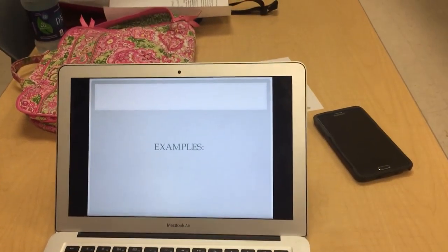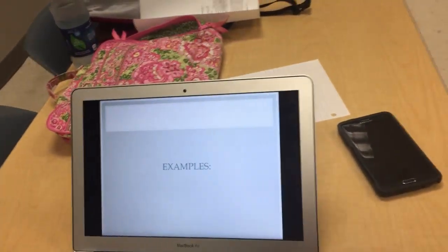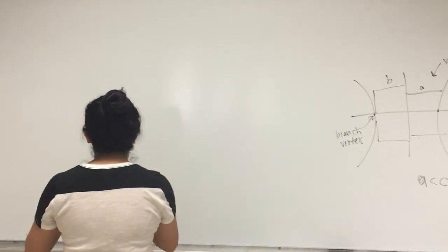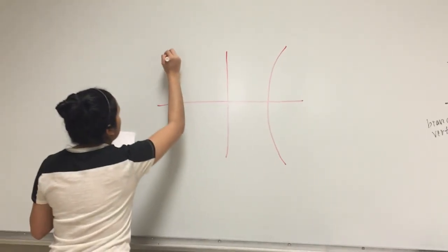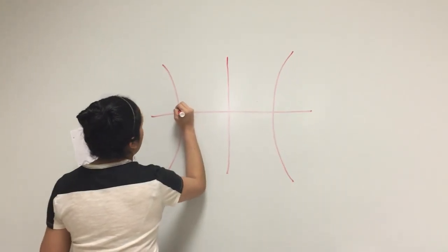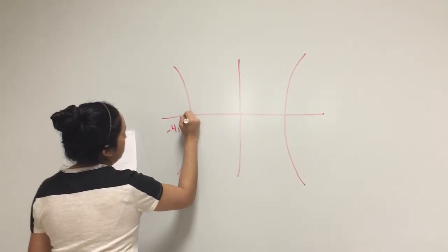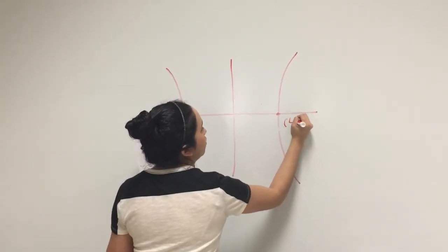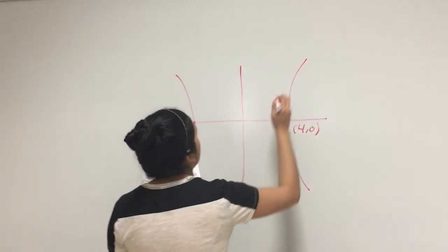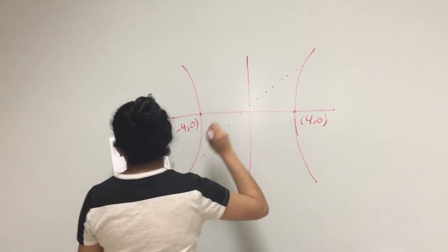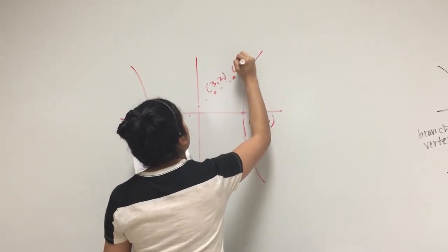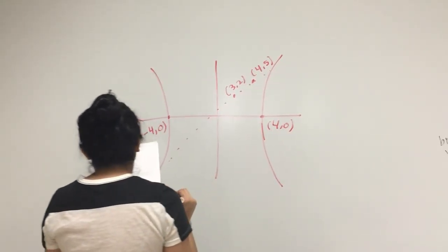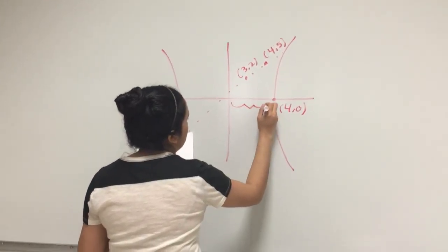So let's do some examples. If we have an equation, we're going to find the equation of this hyperbola. We're going to say that this branch vertex is negative 4, 0, which would mean that this one is 4, 0. There is a line here and two points here. This one is at 3, 2, and this one is at 4, 5.